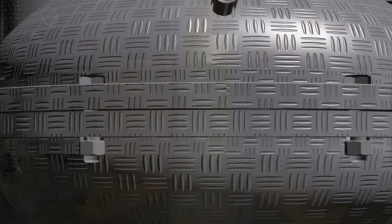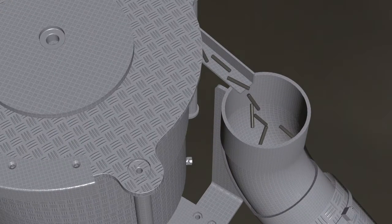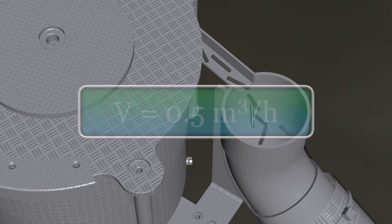Ferromagnetic particles are reloaded automatically by a dispenser. The productivity of the unit is 0.5 cubic meters per hour.